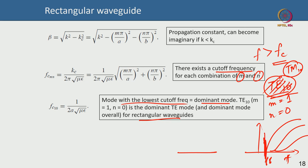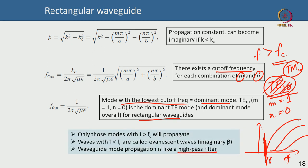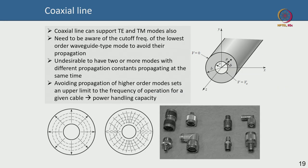If the cutoff frequency of the dominant mode is say 6 GHz, then below 6 GHz the wave cannot propagate — those are called evanescent waves with an imaginary beta. Now a coaxial cable has a signal-carrying conductor in the center surrounded by a metallic outer layer, with dielectric or air in between. It can support both TE and TM modes, so we need to be aware of the cutoff frequency of the lowest order waveguide mode.